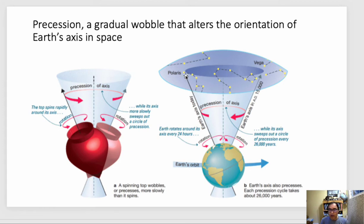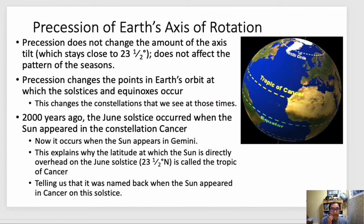And so currently, our northern axis is pointing toward Polaris, but in about 15,000 years, it's going to be pointing towards Vega. So in other words, there's a little bit of a change there over time, which means that the shape of the constellations that we see from Earth is going to be a little bit different. So precession does not change the amount of the axis tilt. It stays the same, 23 and a half degrees, and does not affect the pattern. So we still see patterns of the season. Precession changes the points in Earth's orbit at which the solstices and equinoxes occur. This changes the constellations that we look at.